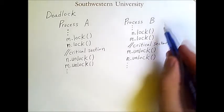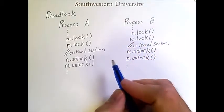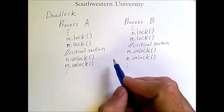Process A locks M and then N, whereas process B locks N and then M. This opens up the possibility of deadlock.